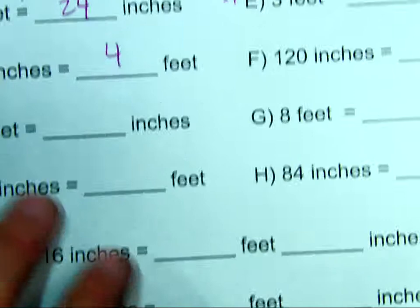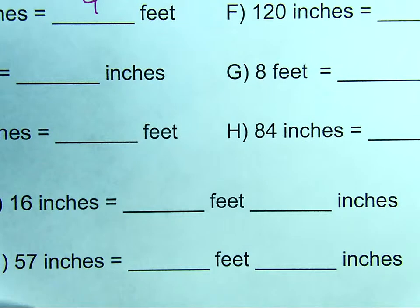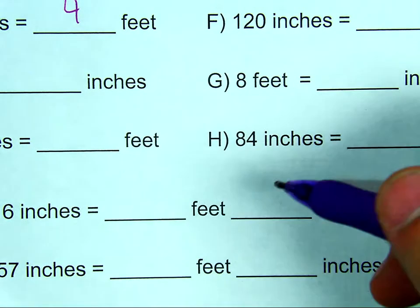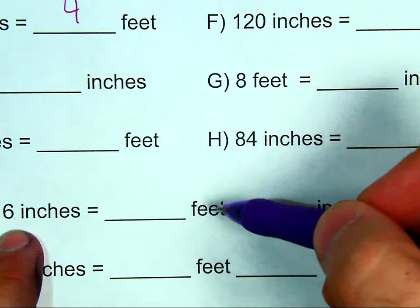You can continue to do the rest of these. I'm going to do one of these down here, letter I. This asks us to convert with some remainders. So, I know that there are 12 inches in 1 foot.